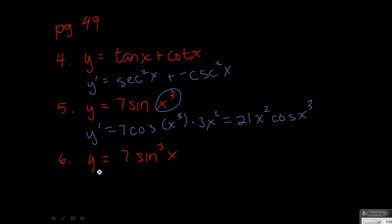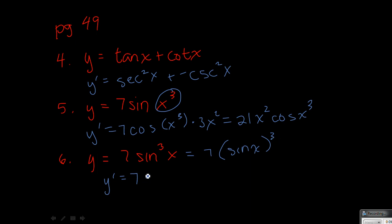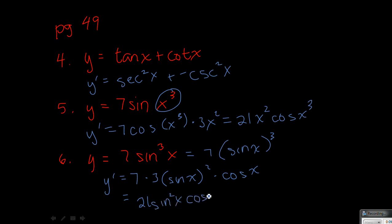Number 6 is almost the same, except now it's the sine that's being cubed. So we're going to keep the 7 out front — nothing happens to that. Then we're going to do the power rule with that 3: so 3 sine x squared, and then we multiply by the derivative of the inside, which is cosine x. So you could simplify this to 21 sine squared x cosine x.